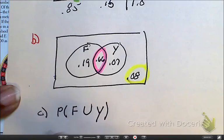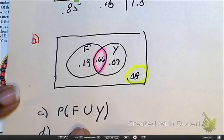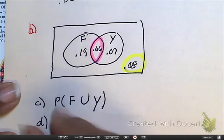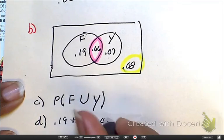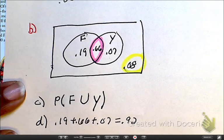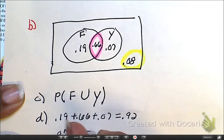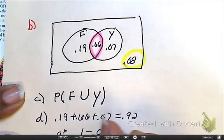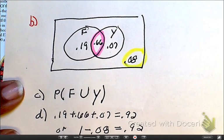And now part D. Part D is asking us to find this probability. So we've got two options. You can add 0.19 plus 0.66 plus 0.07 to give you 0.92, or you can say 1 minus it not happening is 0.92. Okie dokie.